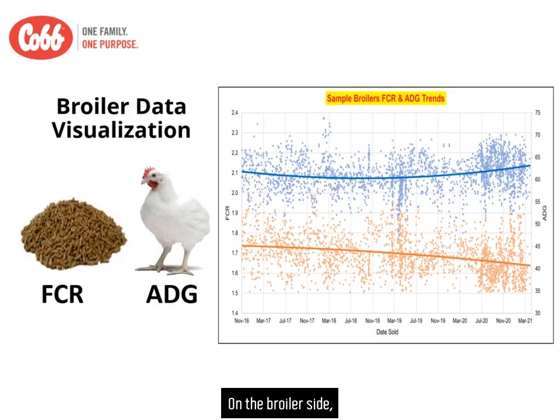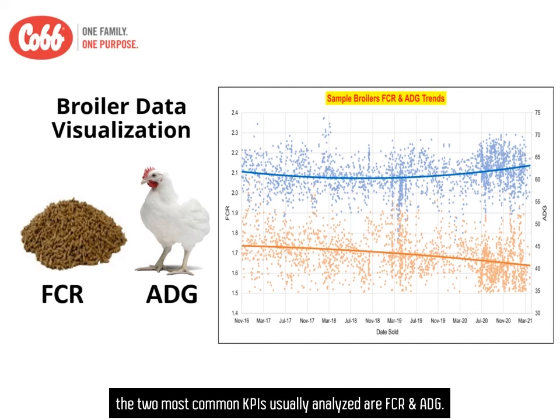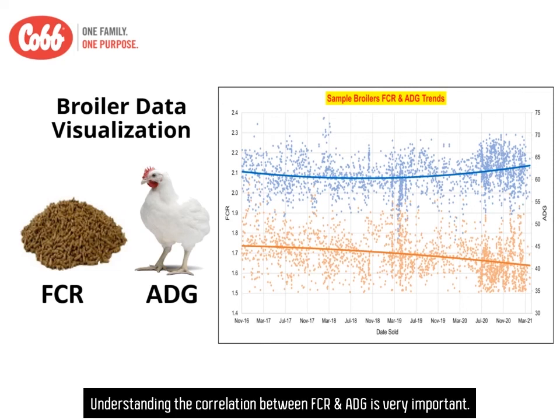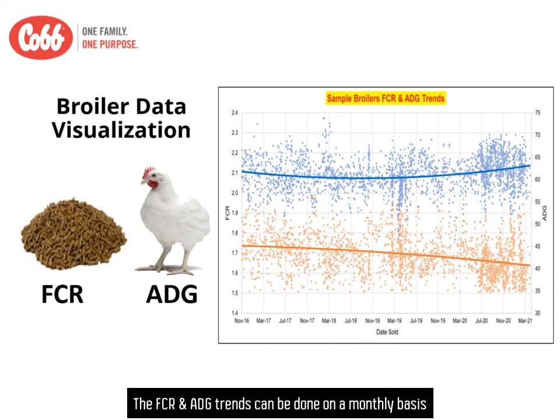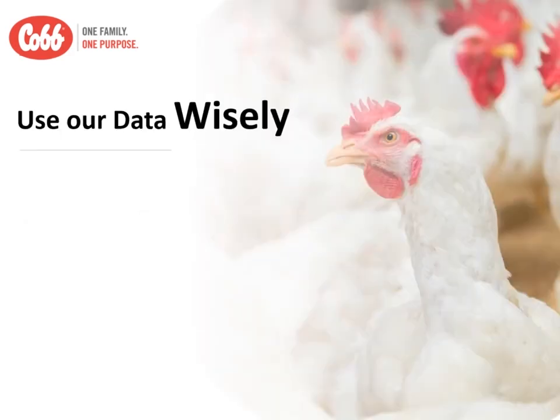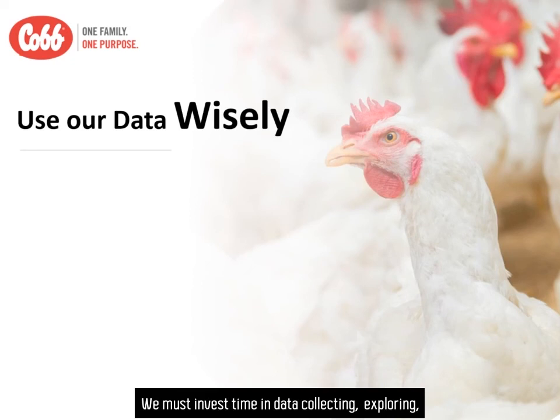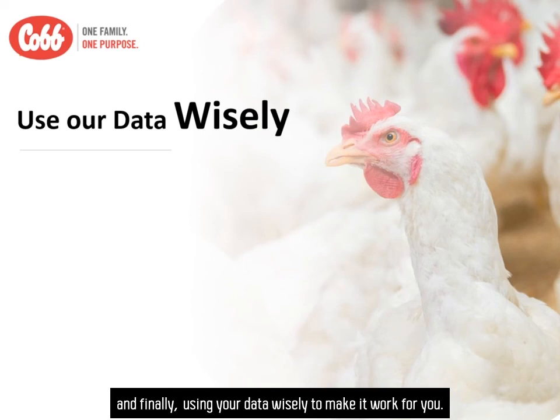On the breeder side, the two most common KPIs usually analyzed are FCR and ADG. Understanding the correlation between FCR and ADG is very important. The FCR and ADG trends can be done on a monthly basis to understand the progress of the breeder performance. We must invest time in data collecting, exploring, and finally using your data wisely to make it work for you.